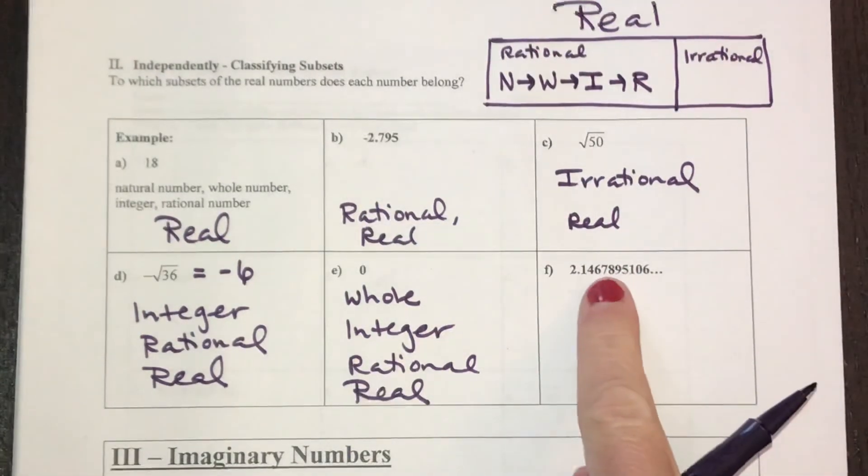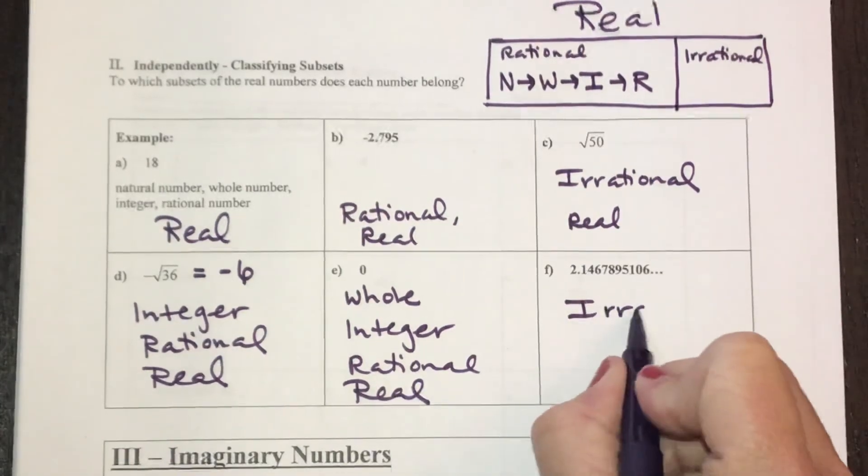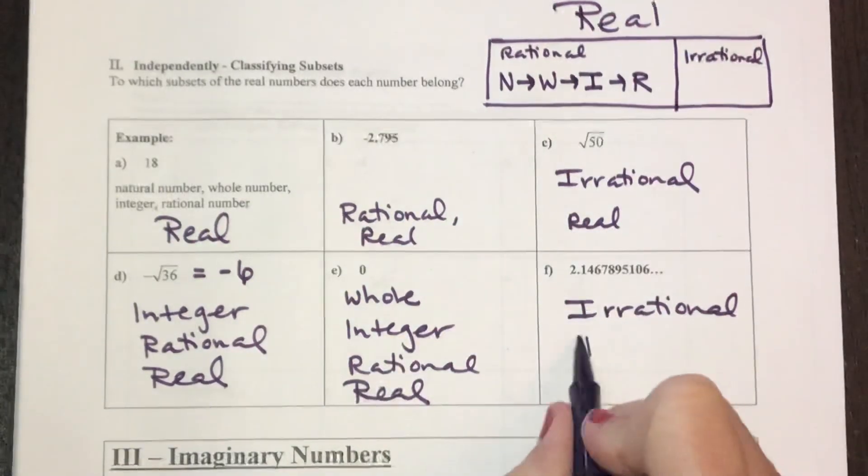This decimal, it does not stop, it does not repeat, so this would be irrational, which is still a part of the real number system.